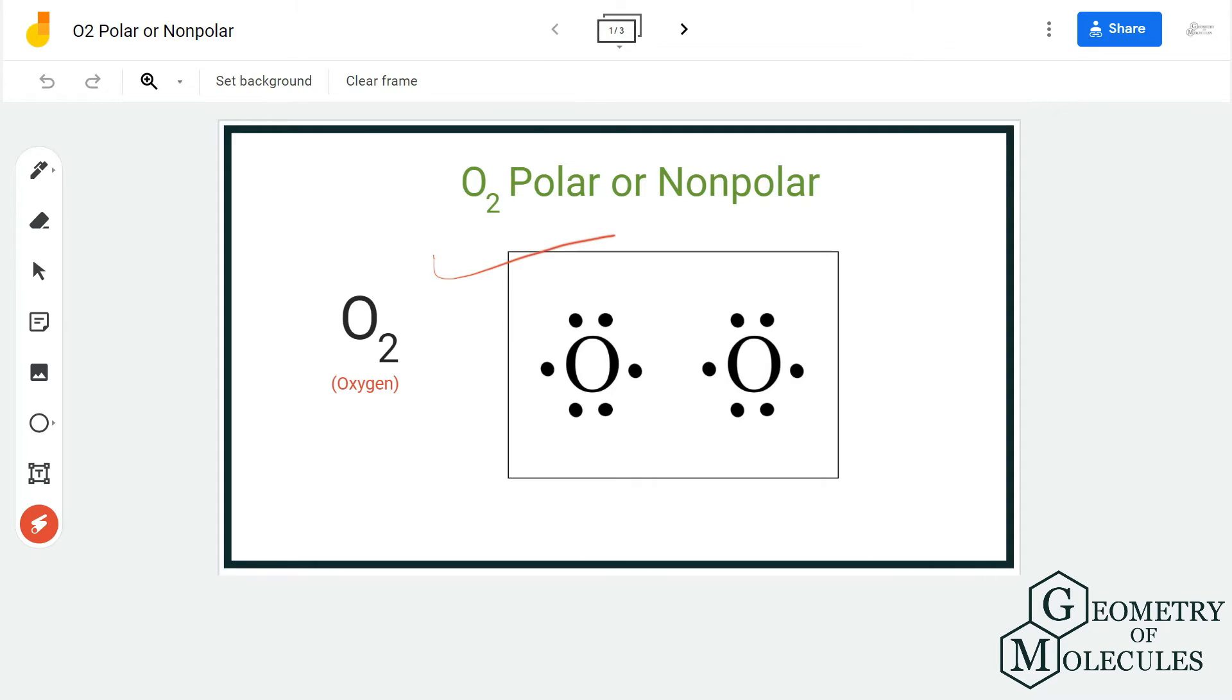The Lewis structure of this molecule is quite simple because there are two oxygen atoms sharing a pair of electrons and forming a bond, and the rest of the electrons are arranged around it.